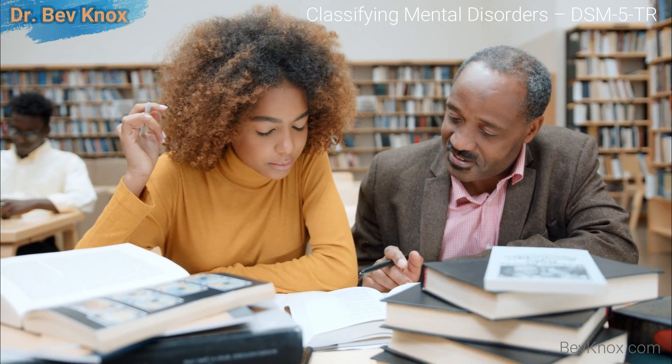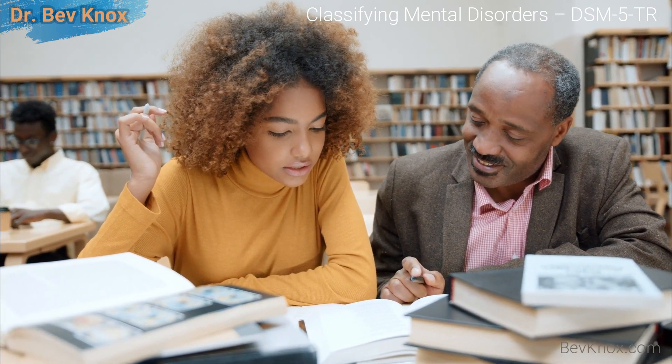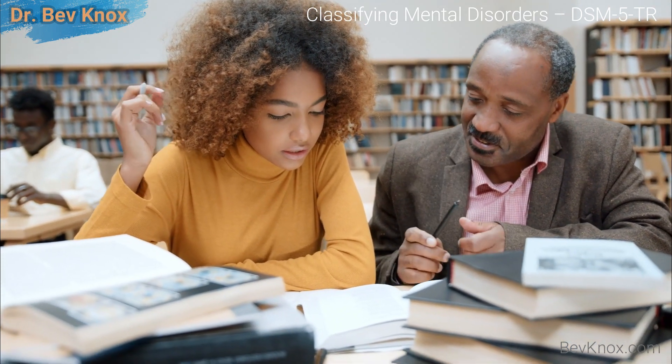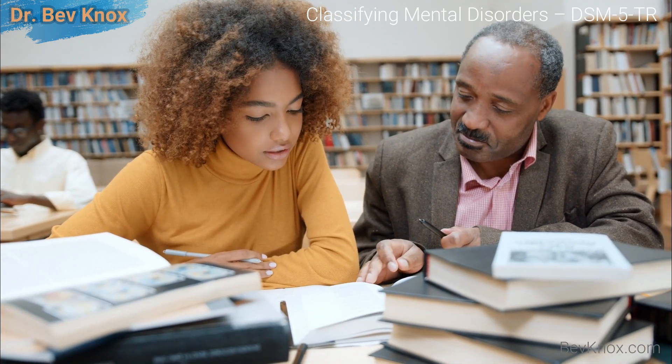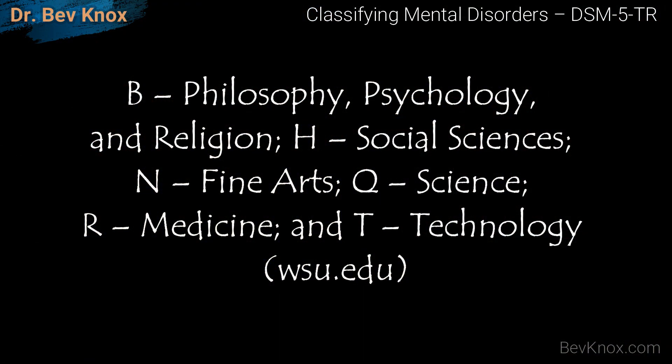The Library of Congress uses classification to organize and arrange their book collections, and includes such categories as B for philosophy, psychology, and religion; H for social sciences; N for fine arts; Q for science; R for medicine; and T for technology.